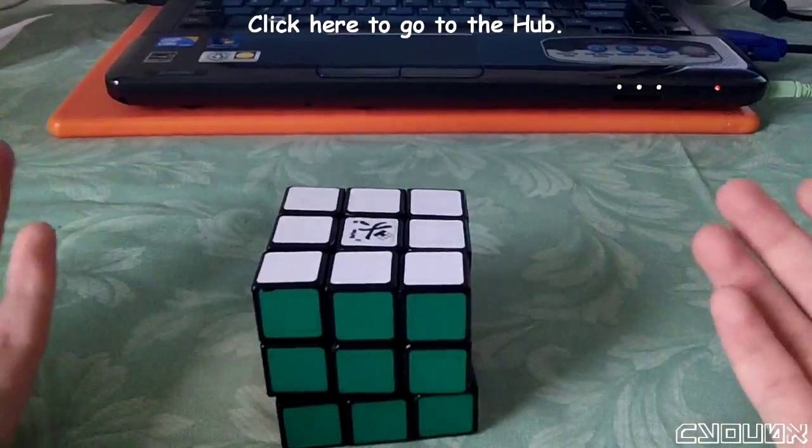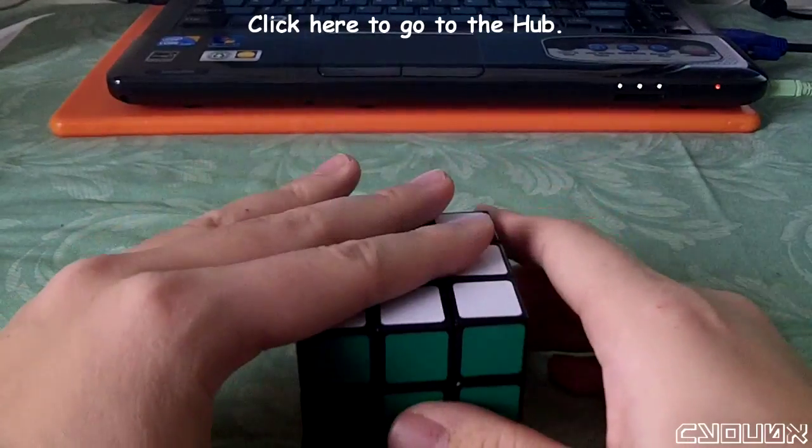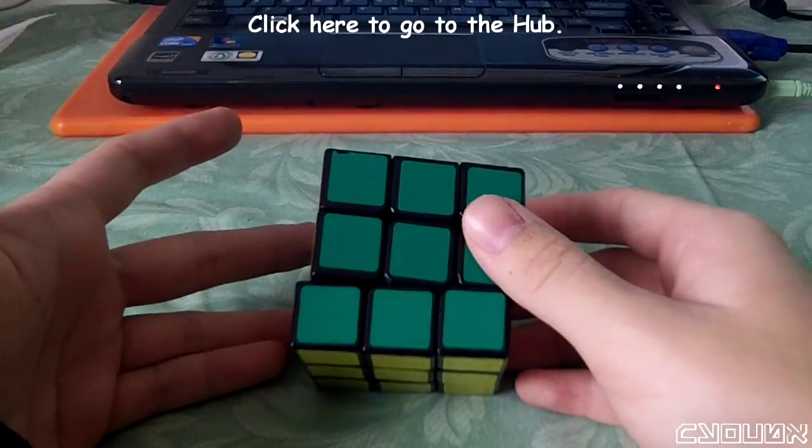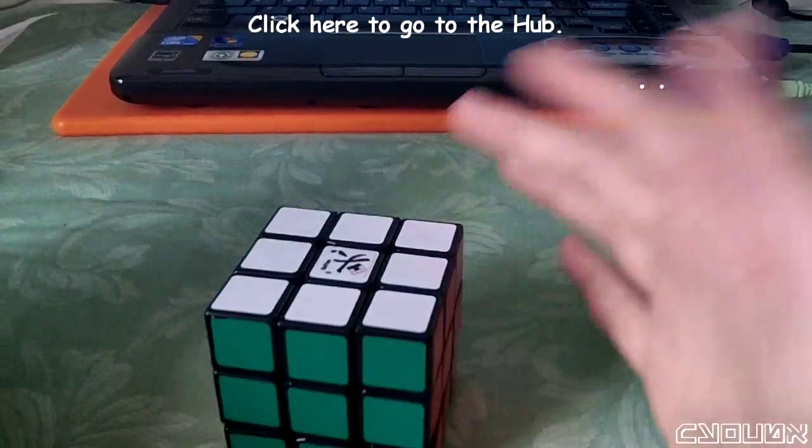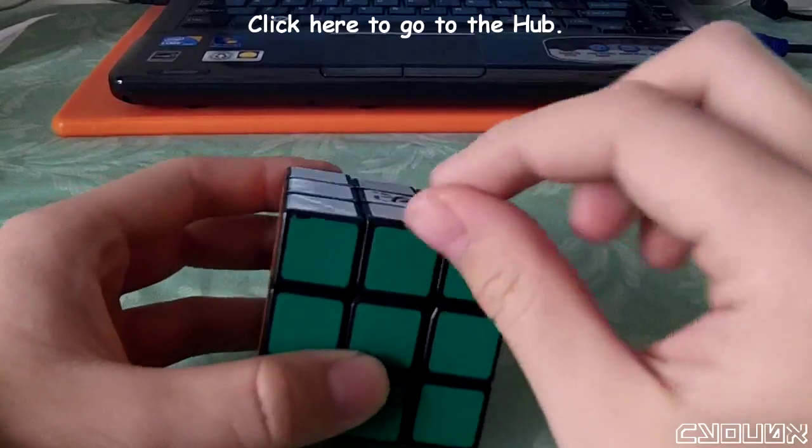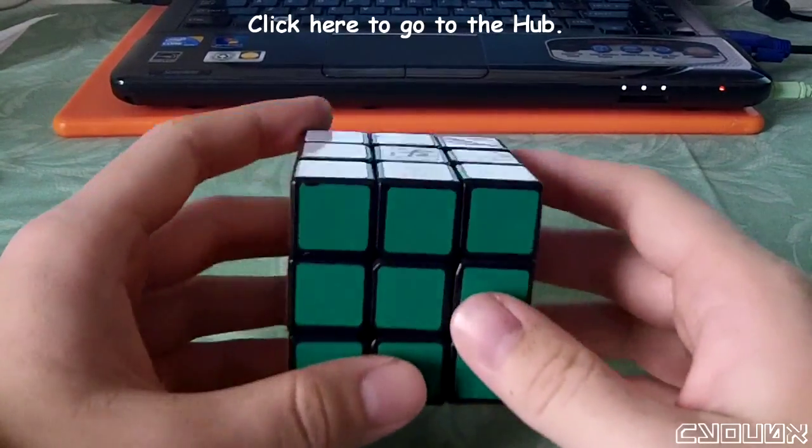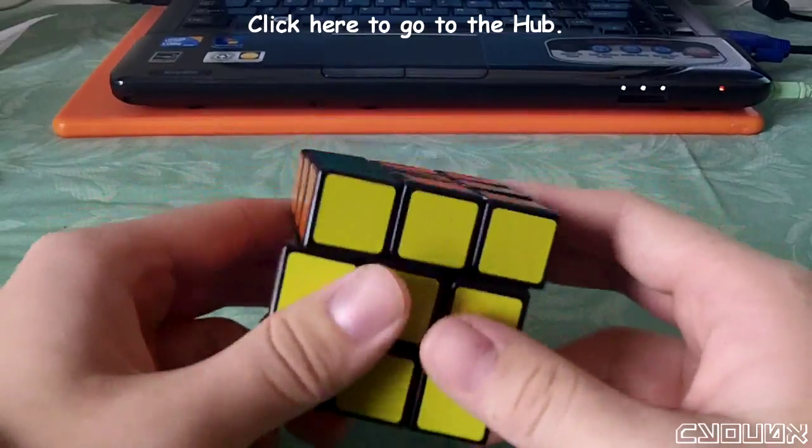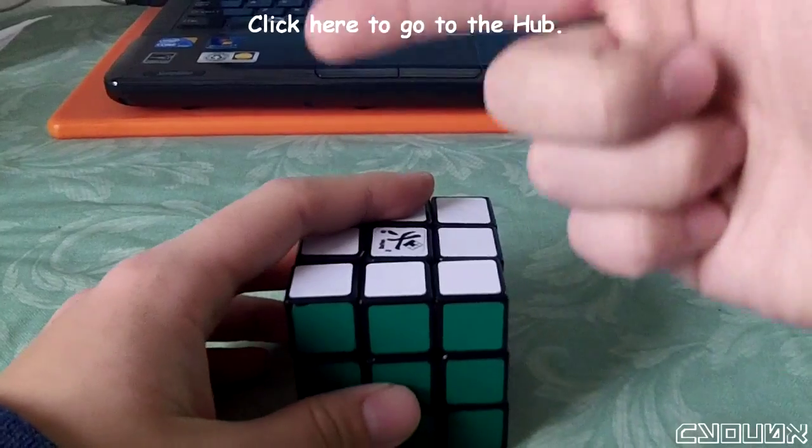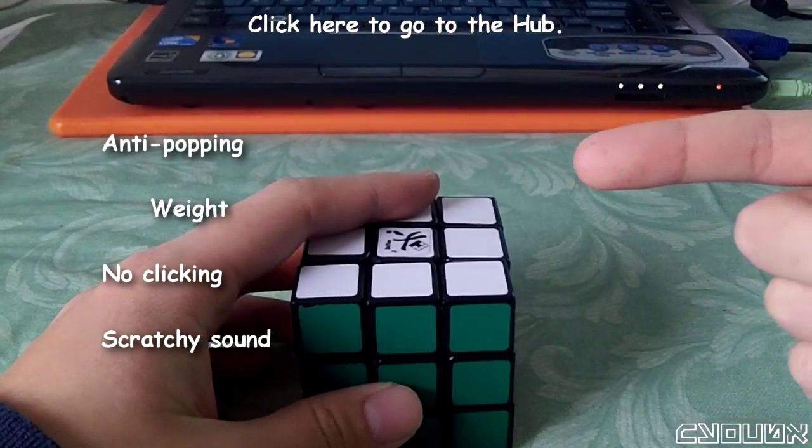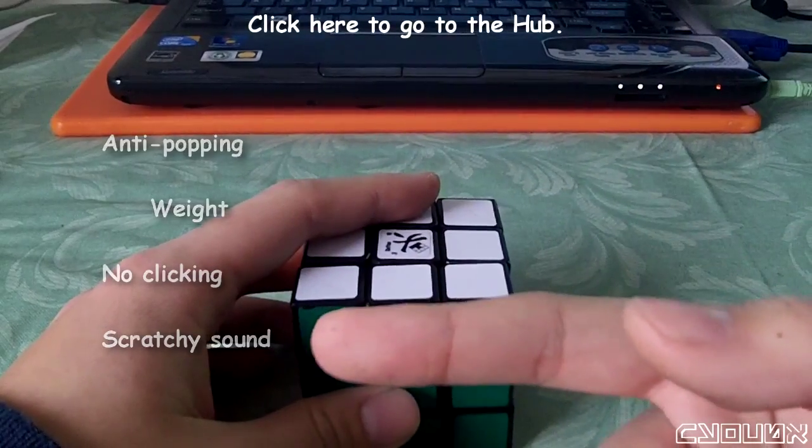So finally, we have a good list. Of the mods that still need to be done, I value anti-popping the most, since a pop could ruin an average for me. Weight will be a secondary priority under the anti-popping, since those two are linked. The smooth feel and acoustics will remain as independent traits. However, I don't value them as highly as anti-popping, so they will go below anti-popping. So then we get this. We get anti-popping at the top, followed by weight, and then we have two independent mods: no clicking and a scratchy sound.